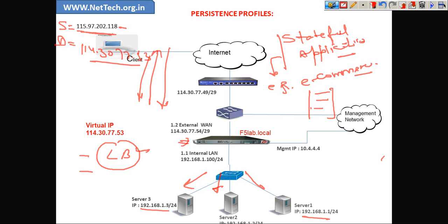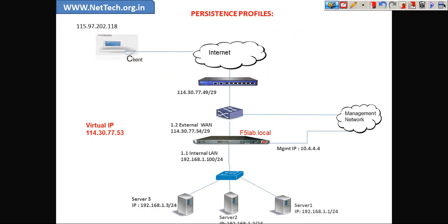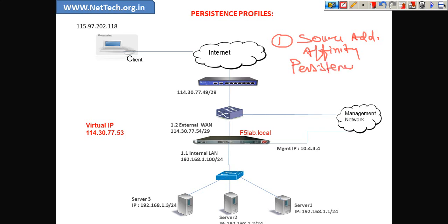How do we ensure that F5 does not apply the load balancing method — that the client will stay connected to the same server? To ensure that, there are two commonly used methods. The first is the source address affinity persistence profile.